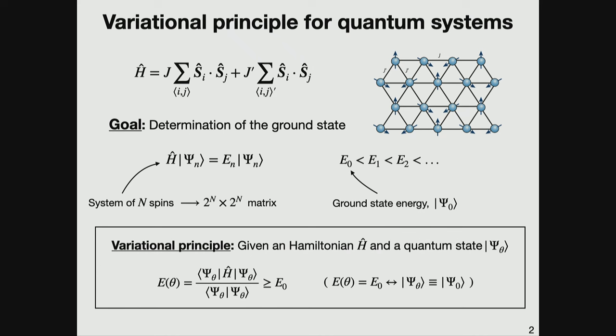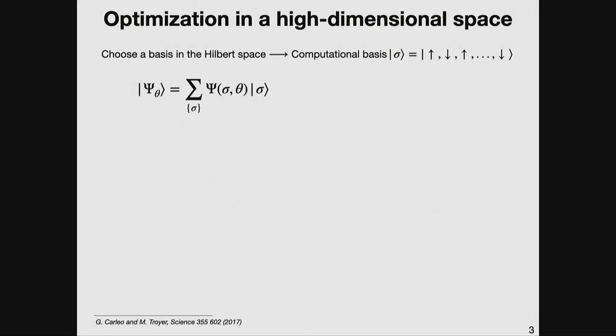The alternative is to use a variational principle, which states that given a Hamiltonian and a generic quantum state, its expectation value is always greater than or equal to the exact ground state energy. The idea is to introduce parameters in the quantum state and then optimize them to minimize the variational energy. The quantum state is an abstract object, so in practice we expand it in a computational basis where the spins are up or down on each site of the lattice. In this way, we define the many-body wave function that we try to approximate.